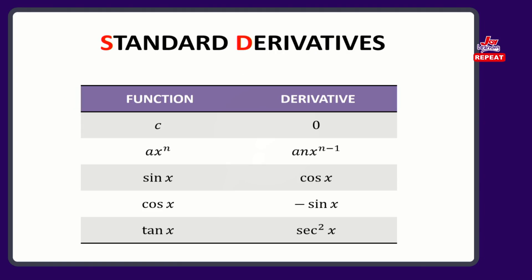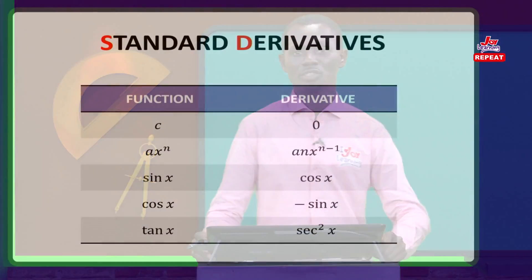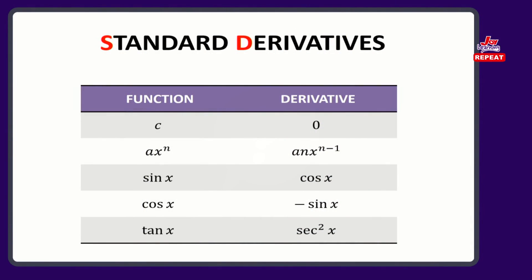Just to mention something quickly — these are standard derivatives. The derivative of a constant c is 0. The derivative of ax to the power n is anx to the power n minus 1. The standard derivative of sin x is cos x. The derivative of cos x is negative sin x. And the derivative of tan x is sec squared x. Remember, all the x are in radians for the trigonometric functions sine, cosine, and tangent.